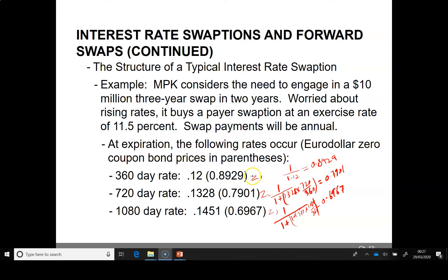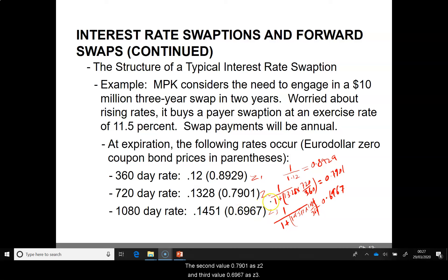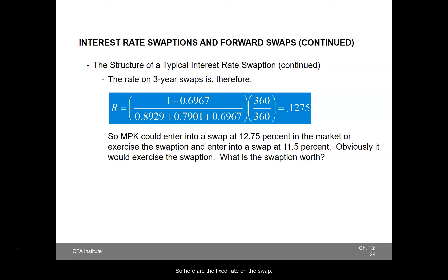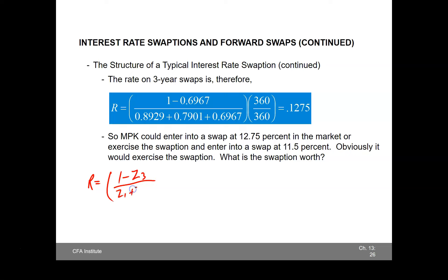We can refer to the first value as Z1, that is 0.8929. The second value 0.7901 as Z2, and the third value 0.6967 as Z3. We are doing this because the swap rate formula makes explicit reference to the Z values. The fixed rate on the swap that has 3 years is calculated as: R equals 1 minus Z3 divided by Z1 plus Z2 plus Z3.